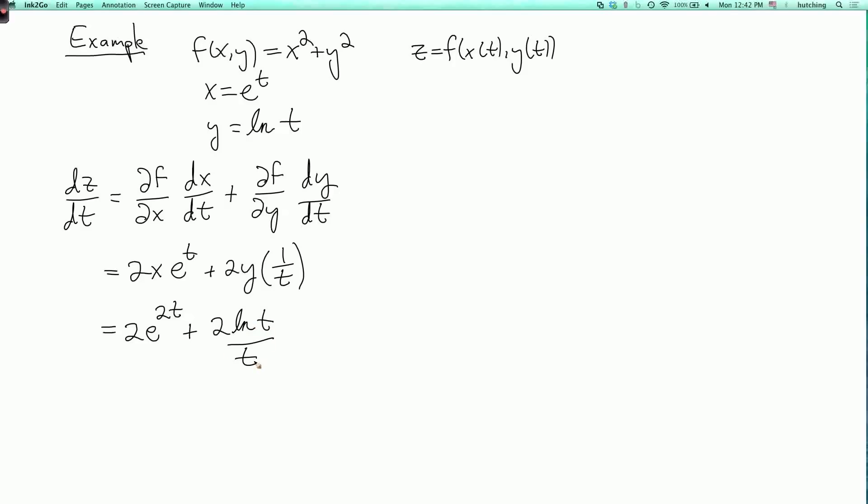That's the answer. Now we could also first expand z as a function of t and then differentiate it using single variable techniques. I could also notice that z is equal to x squared, so it's x of t squared plus y of t squared. So since x of t is e to the t, x of t squared is e to the 2t, and y of t is log t, so y of t squared is log of t squared.